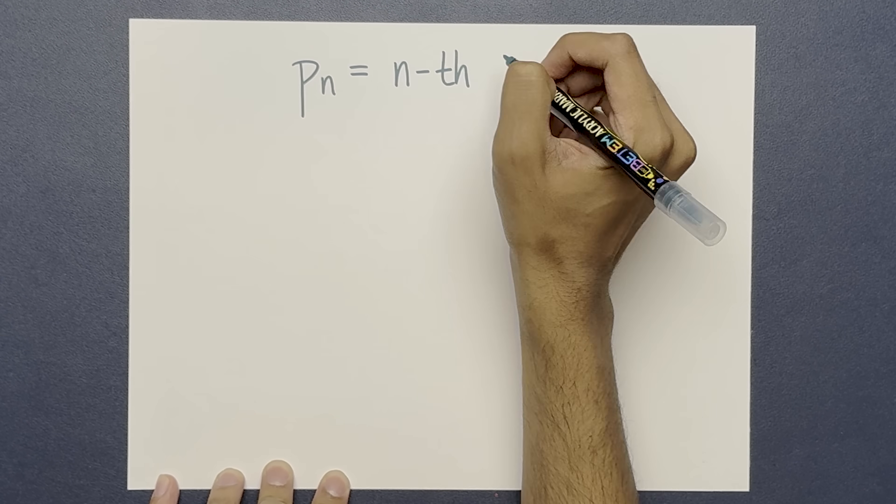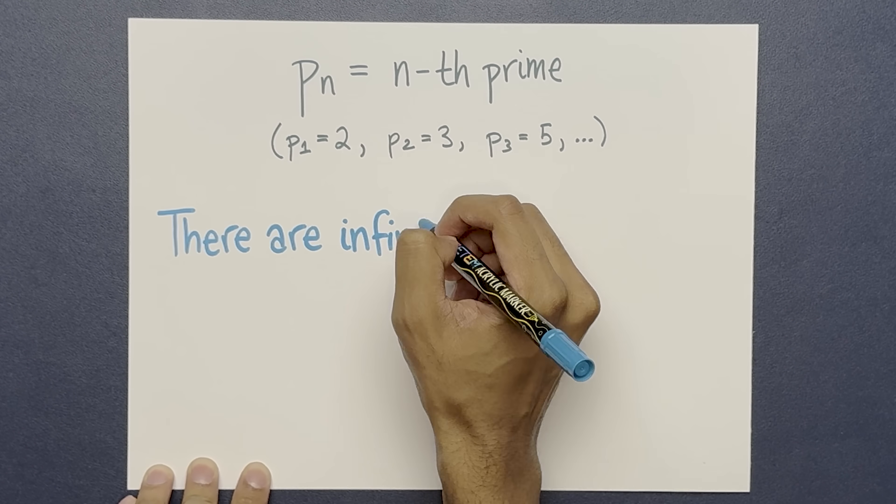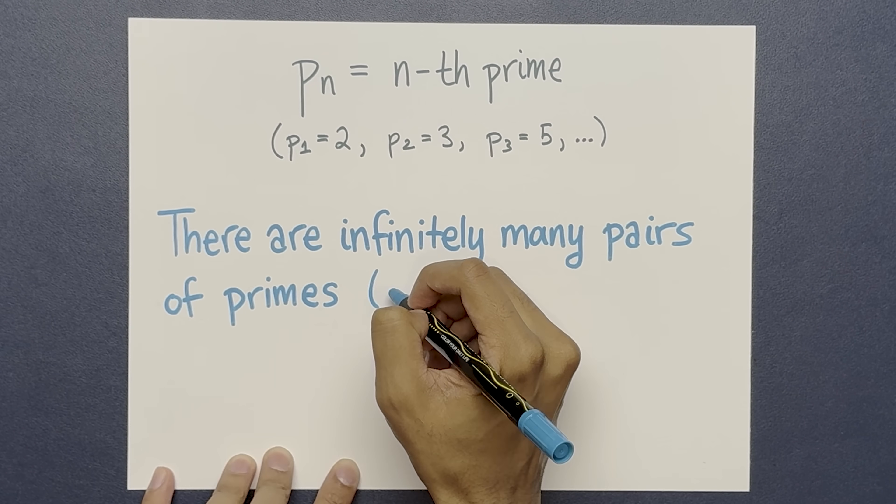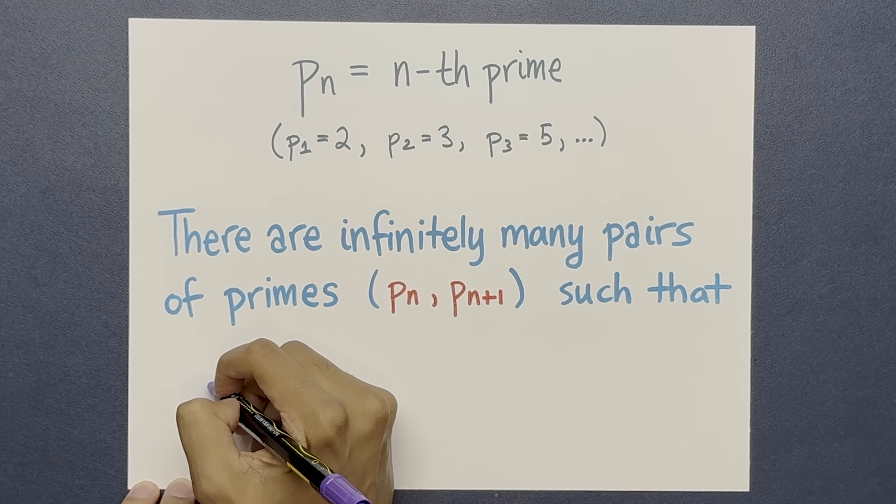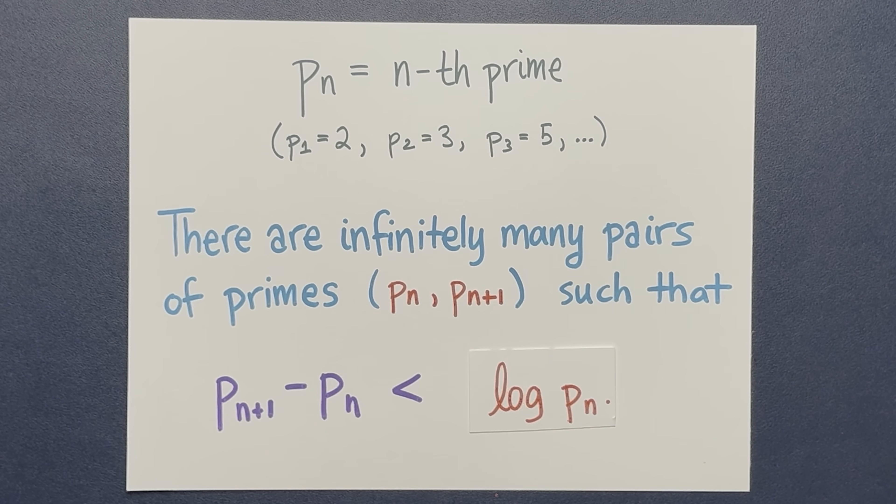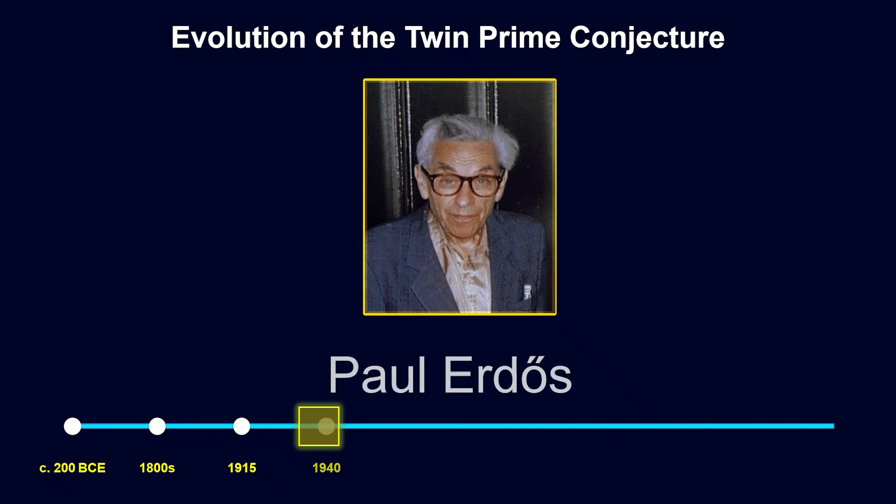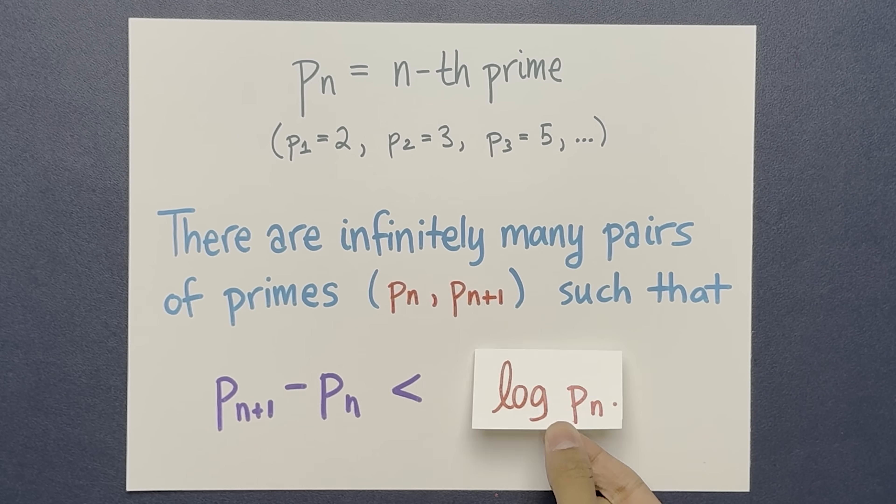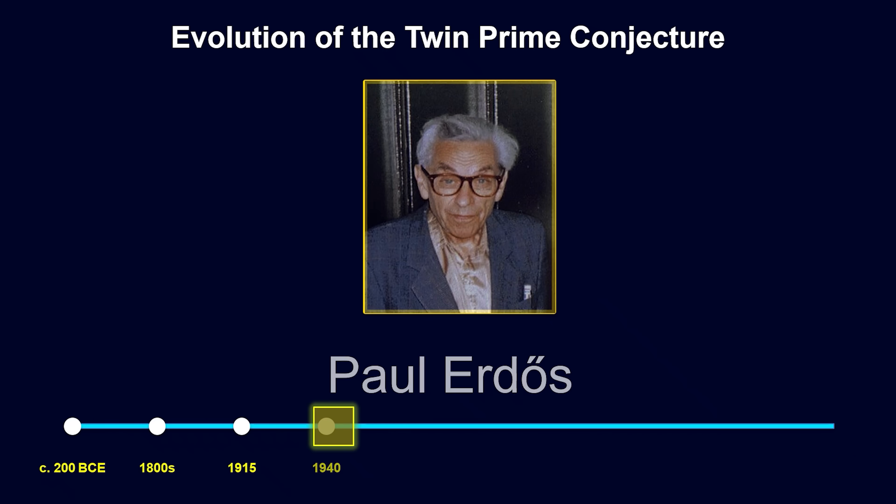Precisely, let p sub n denote the nth prime. Can we show that there are infinitely many pairs of primes such that the difference between them is less than log p n? In 1940, the famous mathematician Paul Erdős proved that this was true. For 40 years, the state of affairs didn't improve. But in 1986, Helmut Meyer put a 1 fourth on the right side.